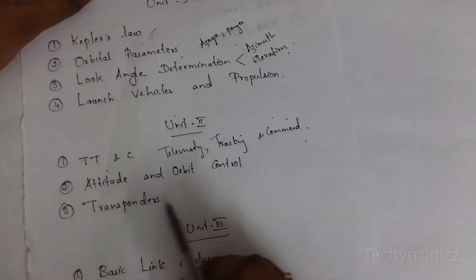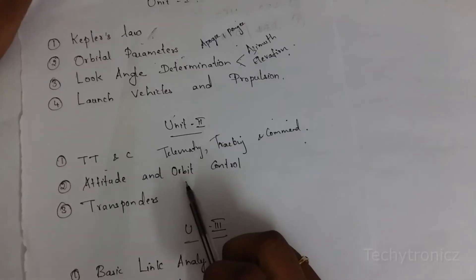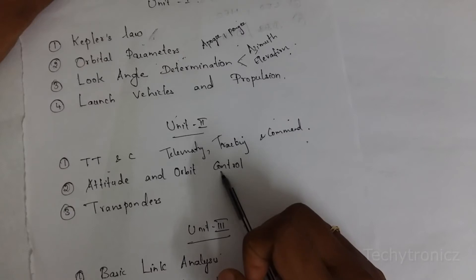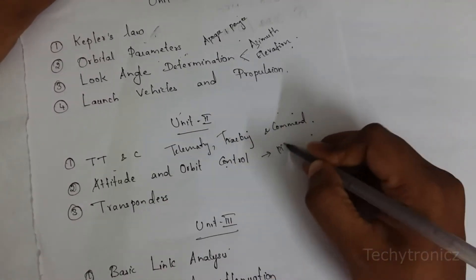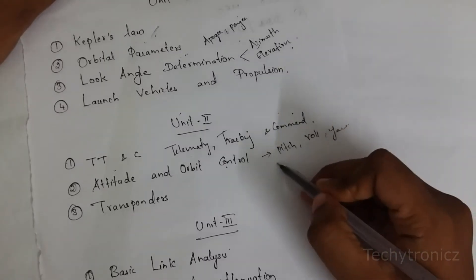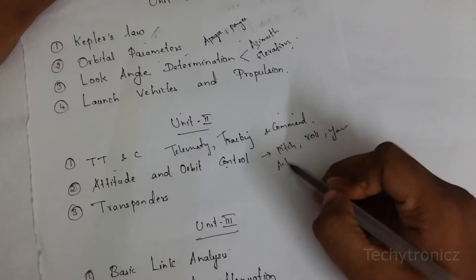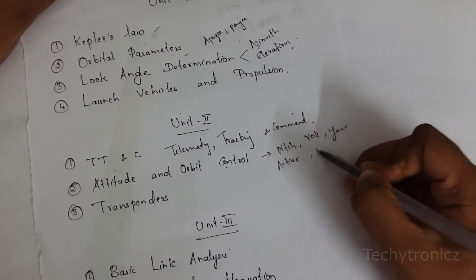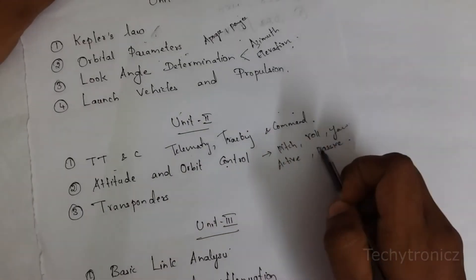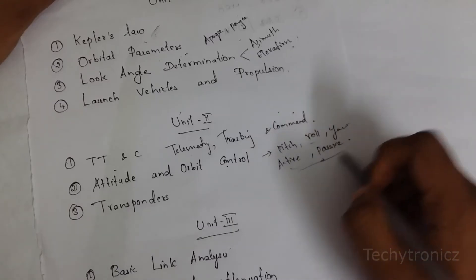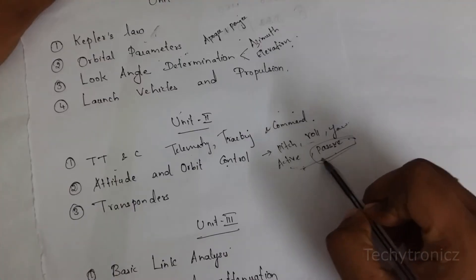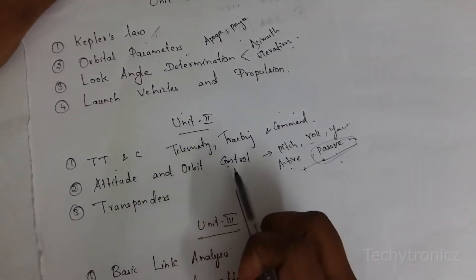The second question is attitude and orbit control. Here you have to learn pitch, roll, and yaw, and also active stabilization methods and passive stabilization methods. This question also has some diagrams for active and passive stabilization methods, so if you draw the diagrams and explain with some theory you can score good marks.